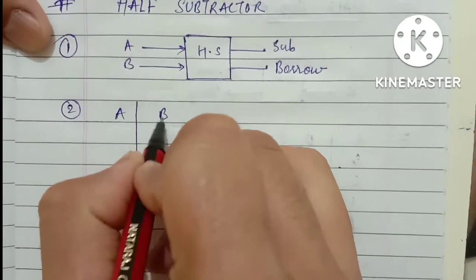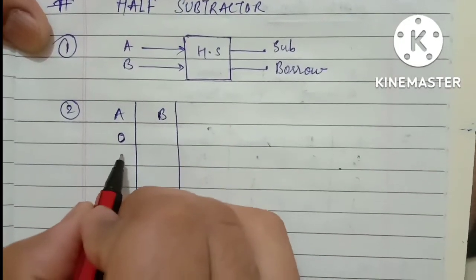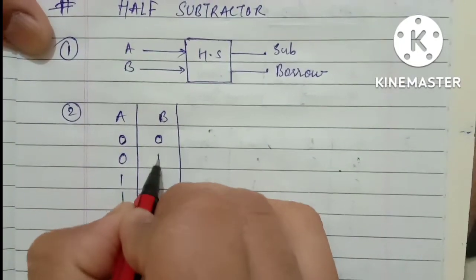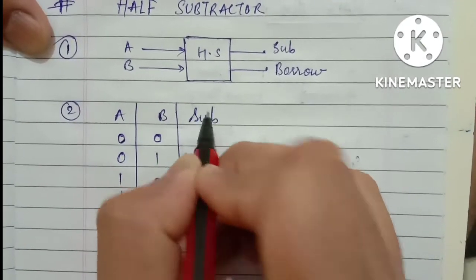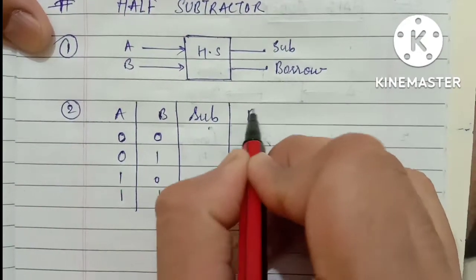Same truth table you need to make. Second step is your truth table. Two numbers, four possibilities. For subtraction and this is for borrow.